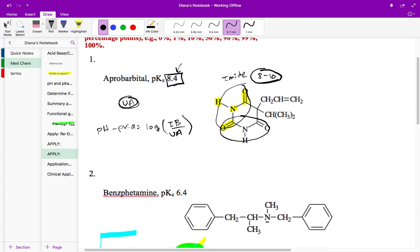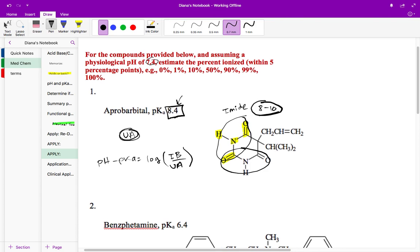So I'm going to take the pH, which is given in the problem, 7.4, minus the pKa, which is also given in the problem, 8.4, is equal to log of the ionized form over the unionized form. When I do that, I know that 7.4 minus 8.4 is negative 1. And then I can go ahead and write log of, and at this point, I like to just go on to ionized over unionized. I kind of lose that base over acid.